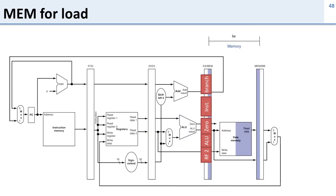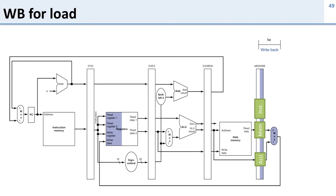Now we go to the memory stage. In the memory stage we access the memory using the output from the ALU as the address. If we're writing we use RF2, and if we're reading we just read. The result of this stage: we keep the instruction, we need the results of the memory if it's a read, and we need the results of the ALU if it wasn't a memory operation, because we need to write those back into the register file.